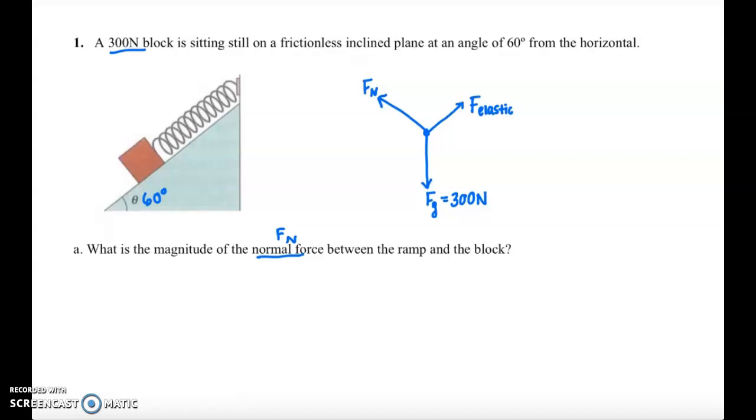I'm also going to want to add this 60 degree angle into my free body diagram. And the trick here is that when you extend the normal force, the angle between that extension and the force due to gravity is always that angle of your ramp. There's some geometry that can prove that. Honestly, I just remember that trick.